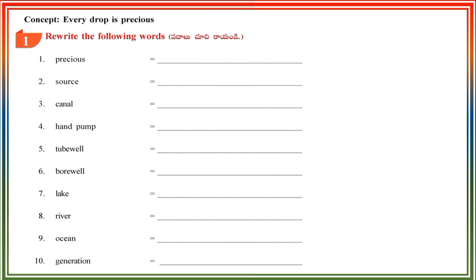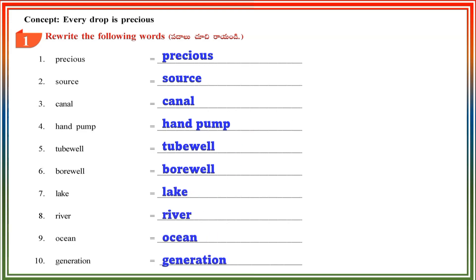Section 1: Rewrite the following words. Precious. Source. Canal. Hand Pump. Tube Well. Bore Well. Lake. River. Ocean. Generation.